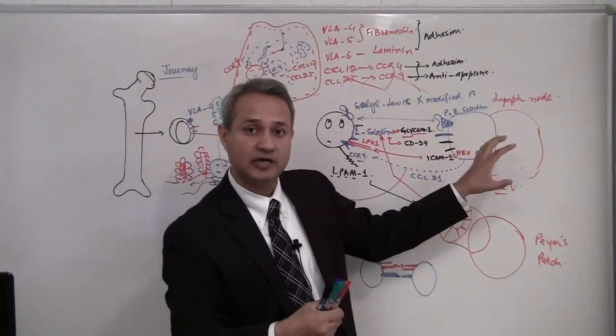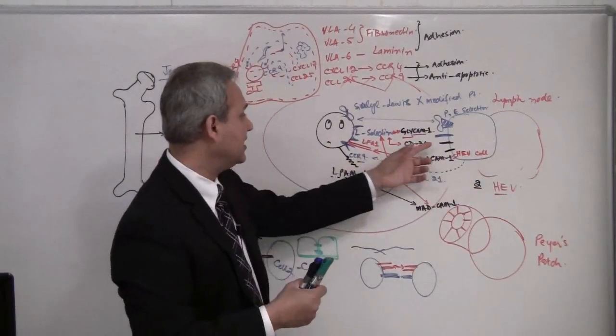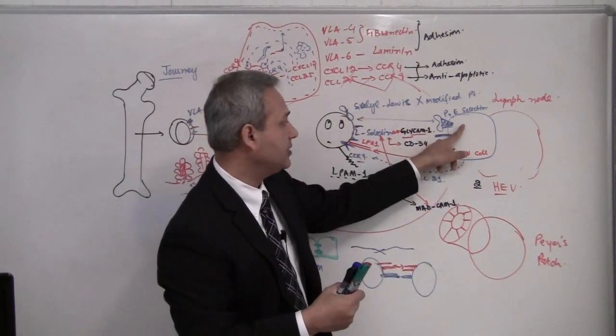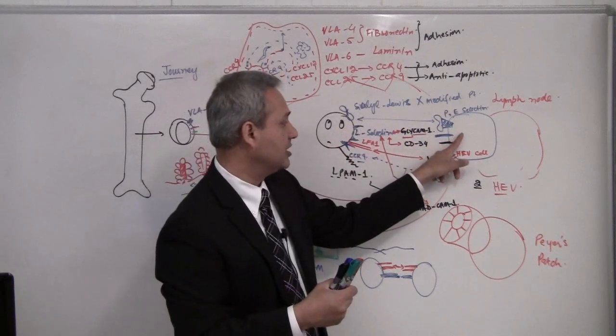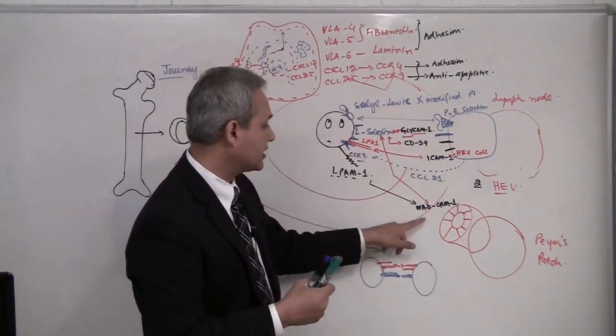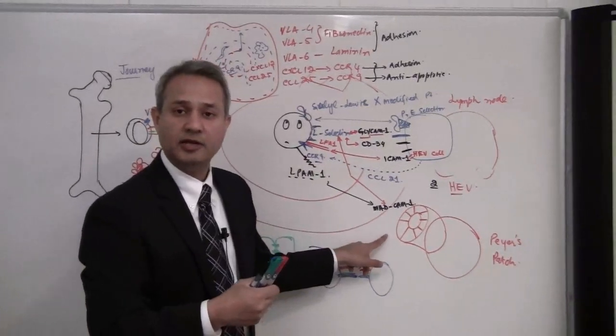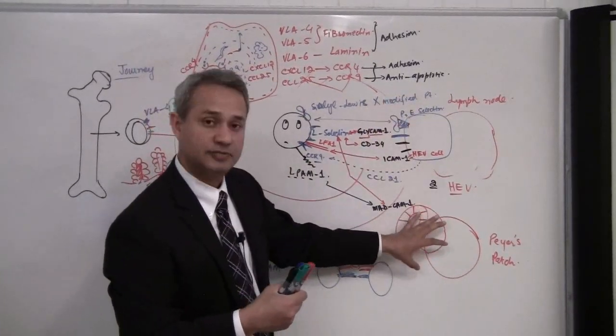When the T cell came near the high endothelial venular cell, the cell started rolling by connecting L-selectin with the P and E selectin, then L-selectin connected with the glycam-1 or L-PAM-1 connected with the madcam-1, depending upon if it is lymph node or a Peyer's patch.